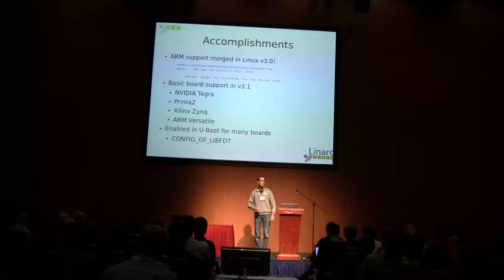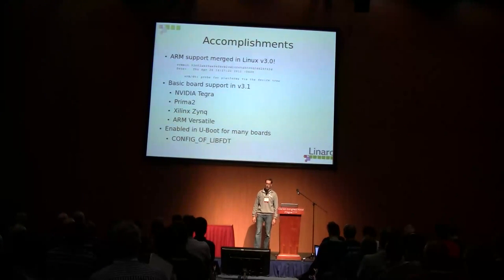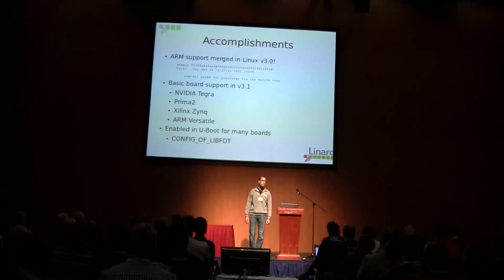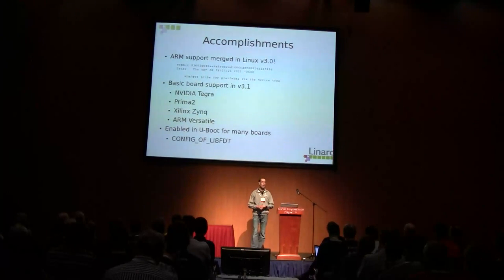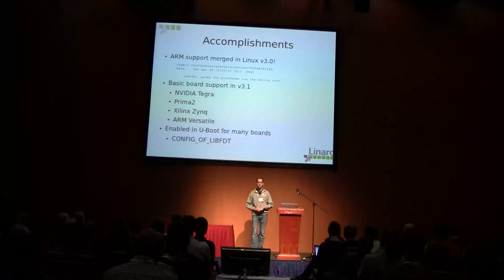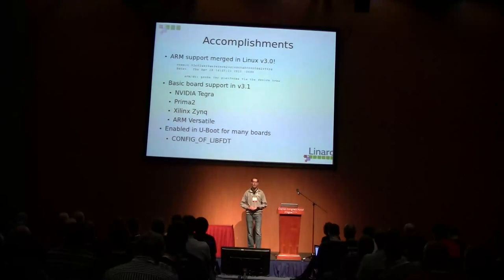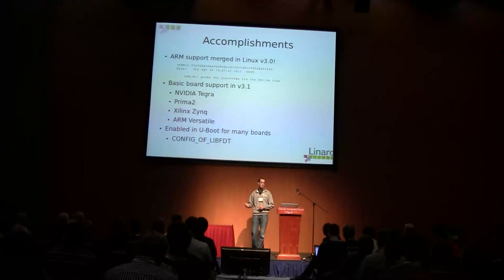That allows me to say where we get to today. On April 28th was the commit that actually turned on ARM support, and Russell asked Linus to pull this for 3.0. This kicked off and got rid of all the uncertainty over whether device tree would be used or not. Was it worthwhile spending the effort doing a device tree port if there was uncertainty about whether it would get to mainline? Well, now it's in mainline — people can start working on it.